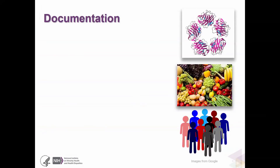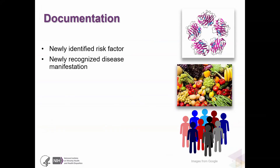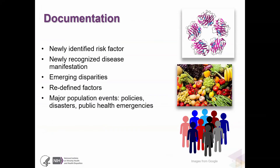If we want to do research to document, we need to ask: Do we want to document a newly identified risk factor or a newly recognized disease manifestation? Do we document emerging disparities? Are we trying to retest and re-explore factors that have been redefined? Have there been major population events like changes in policies, disasters, or public health emergencies? Have there been population changes that we need to document?